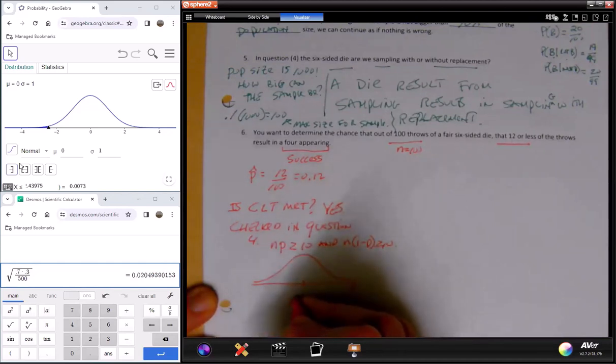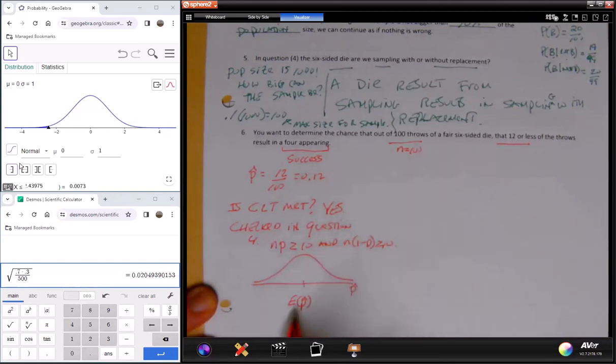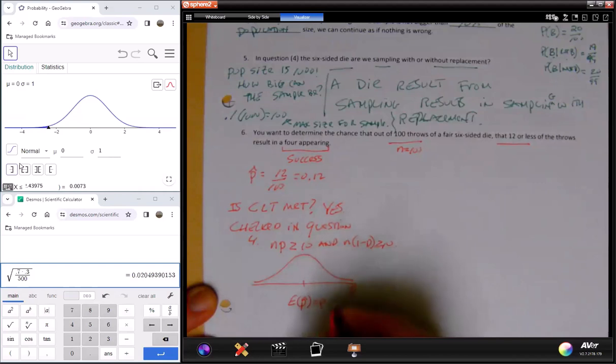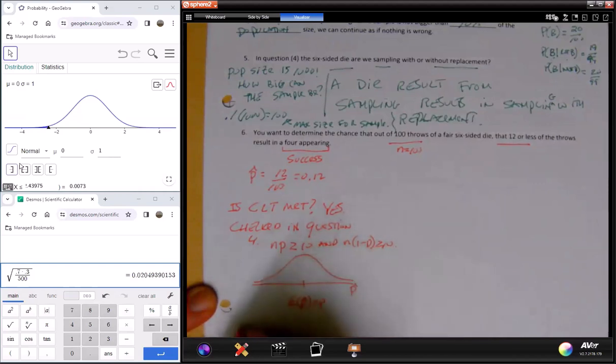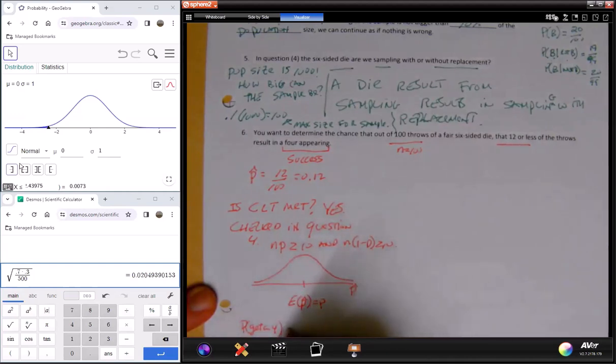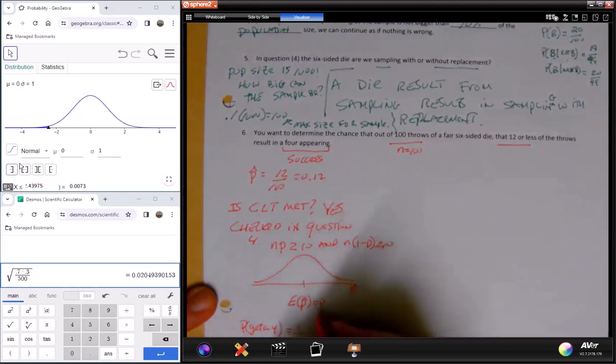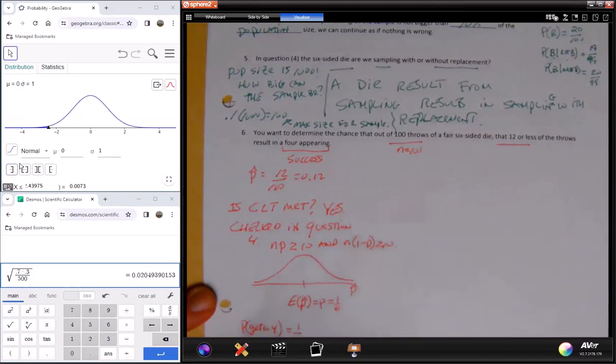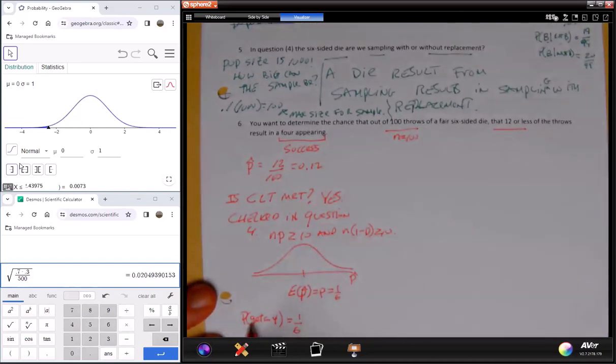So what is at the center? Well, again, looking at my formula sheet, it's E of p-hat, which turns out to be p. But in this case, what am I after? What is p, the chance of getting a four? The probability of getting a four on a six-sided die is one-sixth. So this center is one-sixth. What's the chance of getting a four to appear on a single toss? One-sixth. That's the center of this distribution.